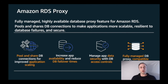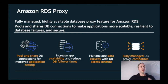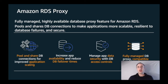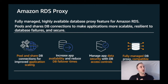Before RDS Proxy, a common problem customers reported was database memory exhaustion when hundreds or thousands of Lambda functions were opening and closing connections to the database at a very high rate. This surge in database connections would often lead to slower queries and limited application scalability. RDS Proxy was built specifically to solve that problem.